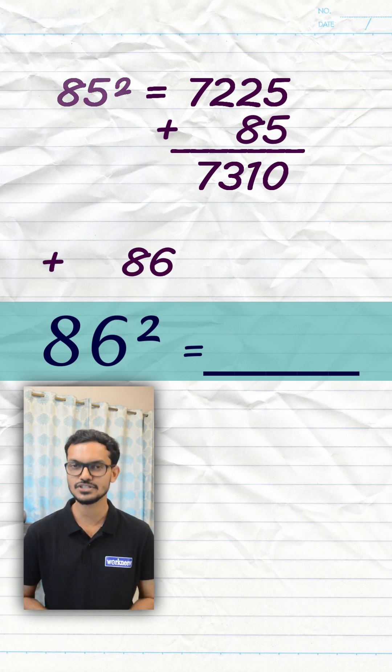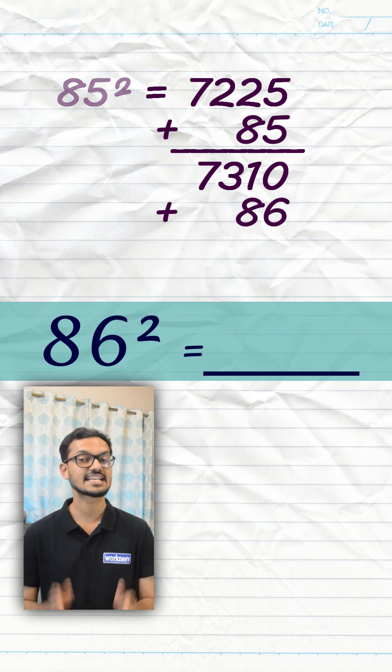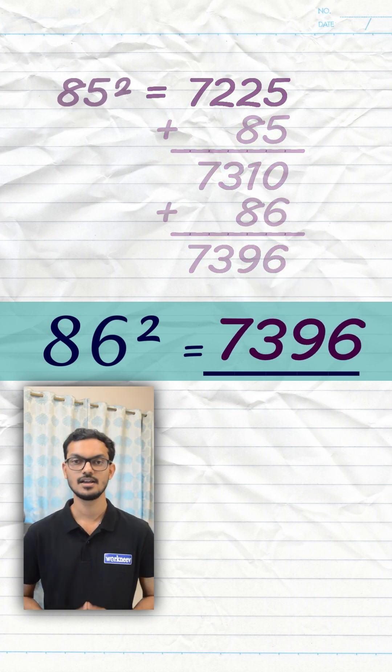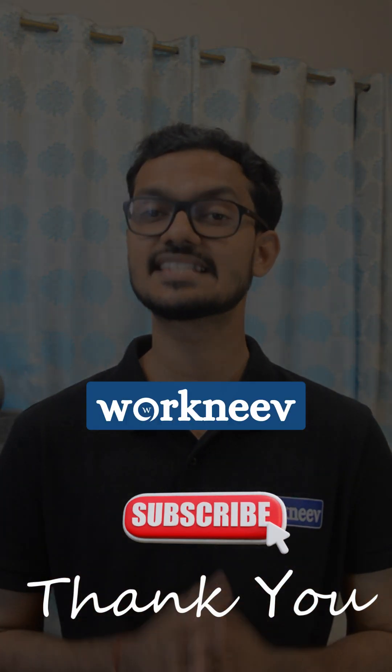Then add 86 to it, we will get the final answer as 7396. Now try this yourself and type the answer in the comment section. What is 36 square?